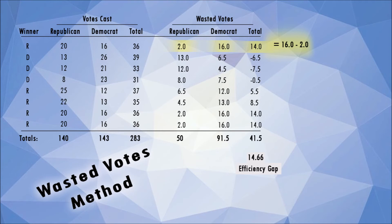So be very careful in this step. From here, the efficiency gap is simply the total wasted votes as a percentage of the total votes, and the efficiency gap of 14.66 matches our other result.